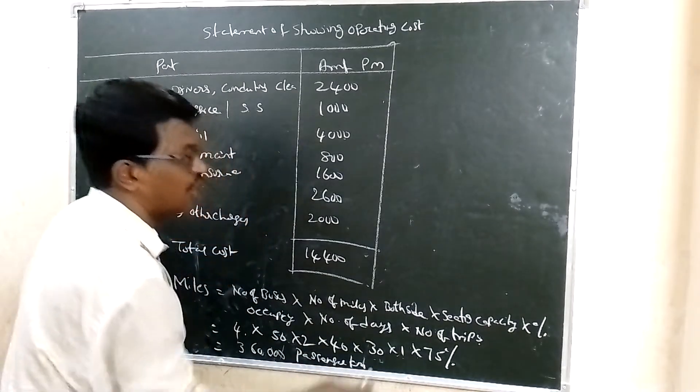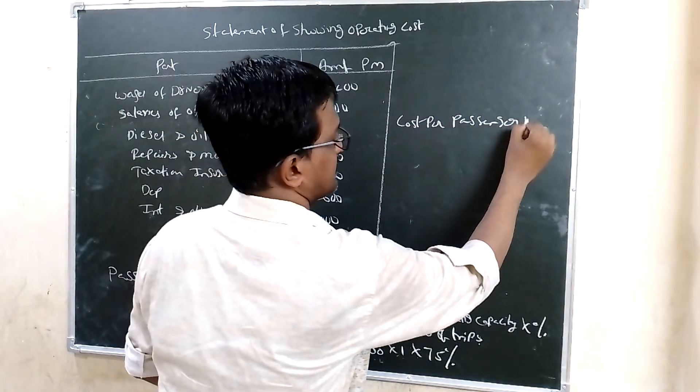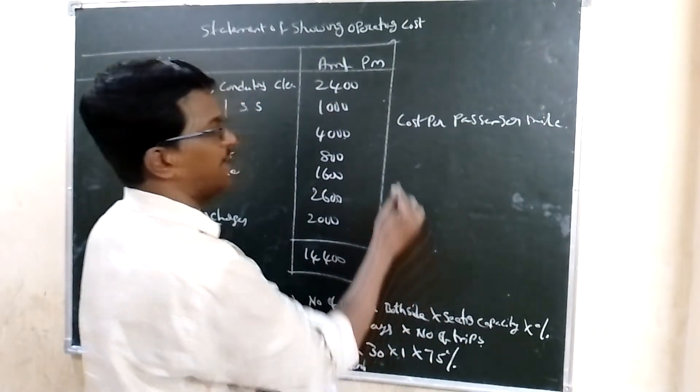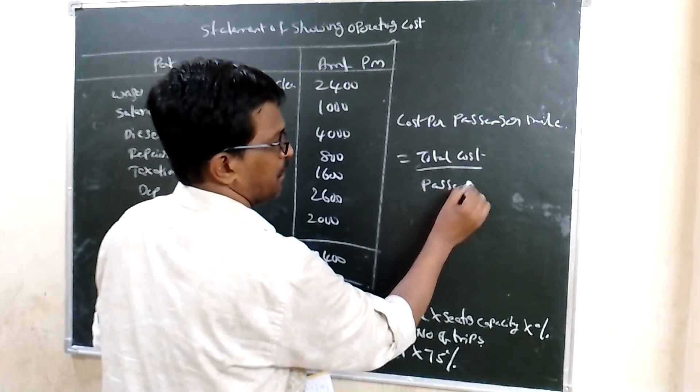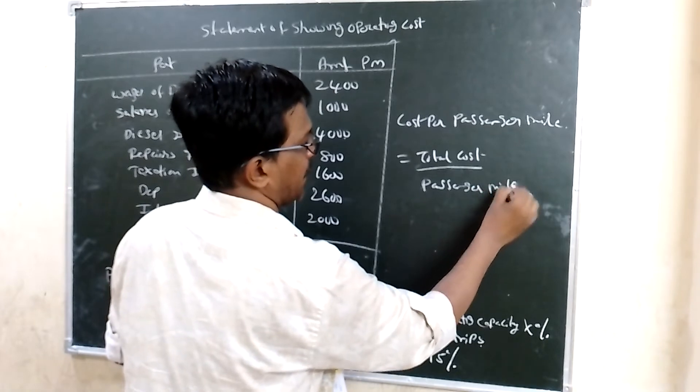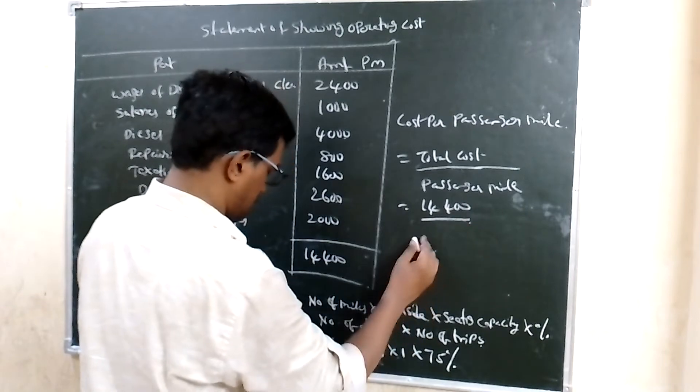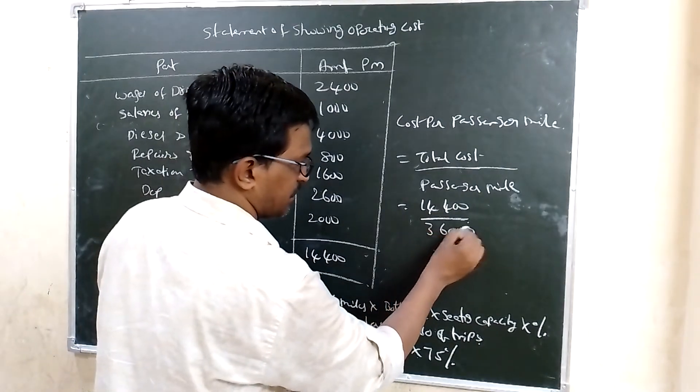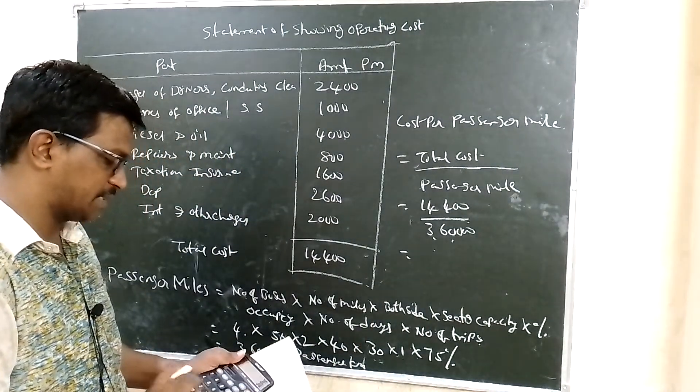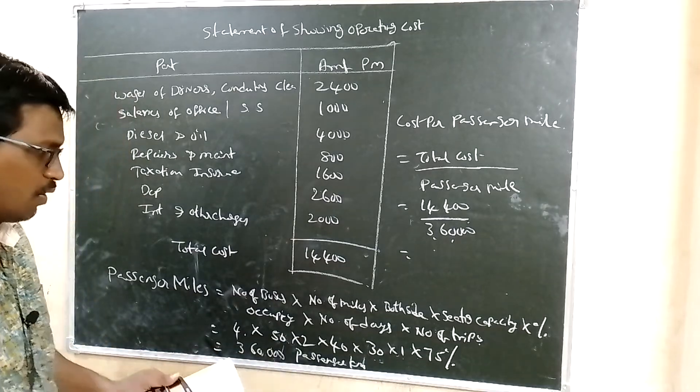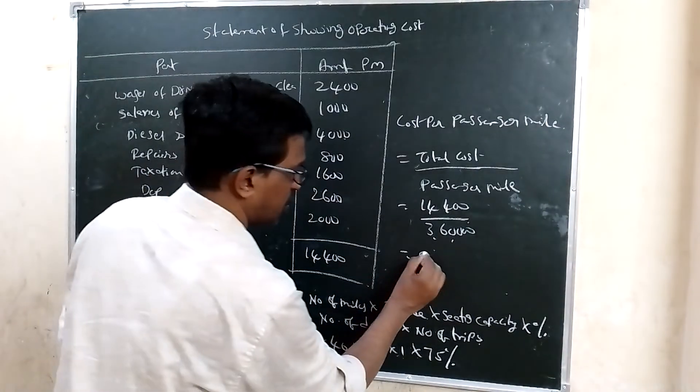Cost per passenger miles. So total cost by passenger miles. Total cost is 14,400 divided by 360,000. 14,400 by 360,000 equals 0.04 rupees.